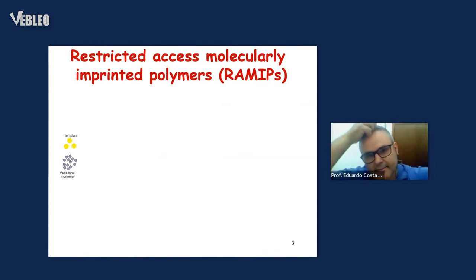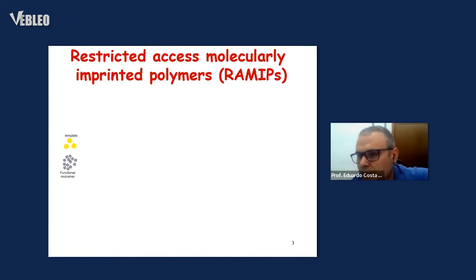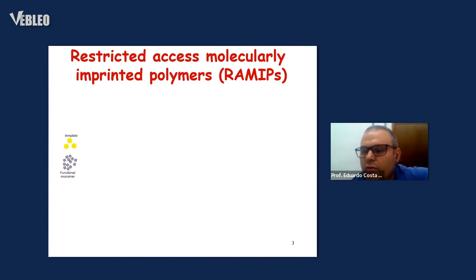Some researchers have developed intelligent materials that can be used as tools in sample preparation protocols in order to capture the analytes and eliminate the proteins. These materials are called restricted access materials, and they consist of the modification of conventional sorbents in order to confer on the material the ability to exclude proteins.